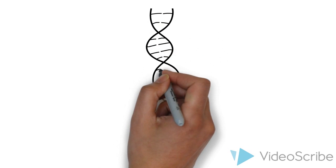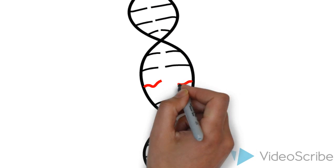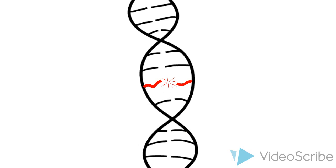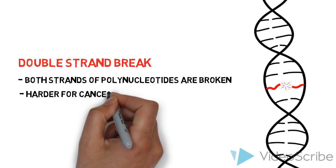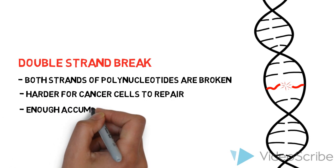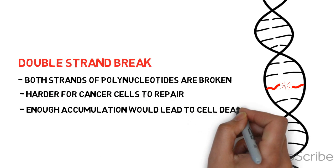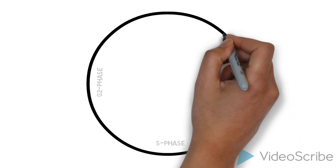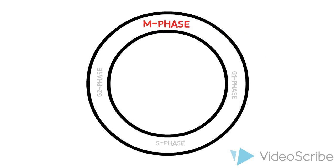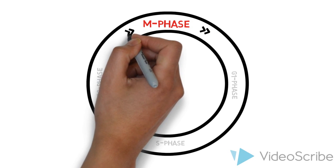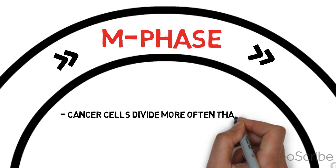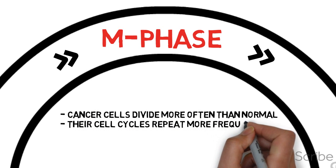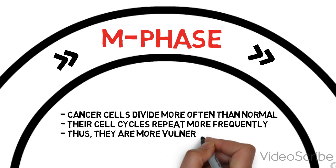The goal of radiotherapy and other cancer treatments is to produce a double-strand break — this is when both strands of polynucleotides are broken at the same spot, which should understandably be harder for cancer cells to repair. Enough accumulation of these double-strand breaks will hopefully lead to cell death. It is easiest to cause a double-strand break when a cell is in its M phase of the cell cycle, when the chromosome is dividing. Cancer cells divide more often than normal cells — their cell cycles repeat more frequently — making cancer cells more vulnerable to radiation than normal cells.